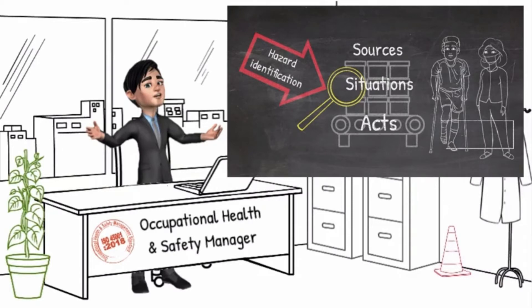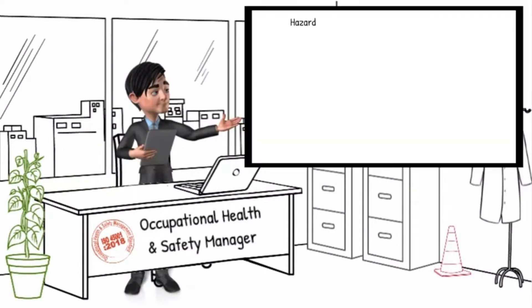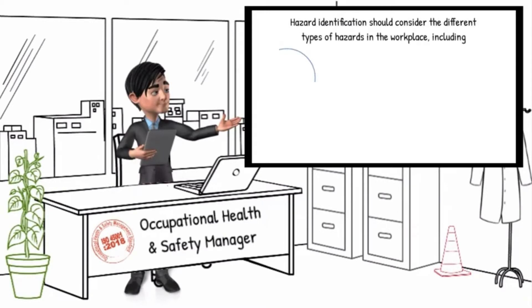Now we will look at the types of hazards in the workplace. Hazard identification should consider the different types of hazards in the workplace, including physical, e.g. slips, trips and falls, entanglement, noise, vibration, and harmful energy sources.